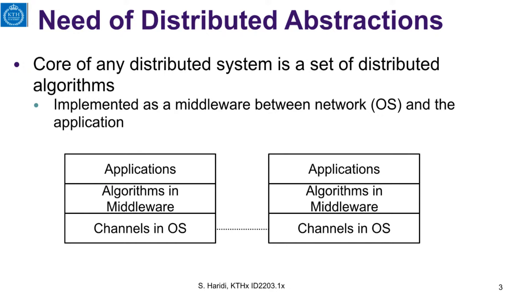Here we see the network provided by the operating system, and here is the application level. And between these we have core distributed services implemented by distributed algorithms.